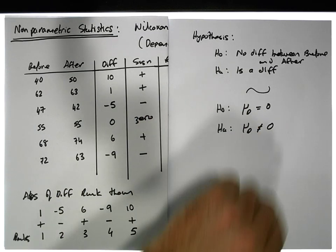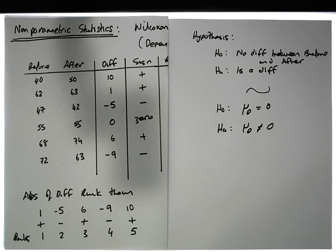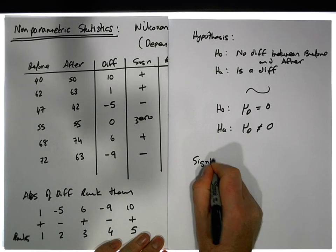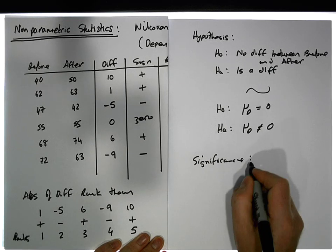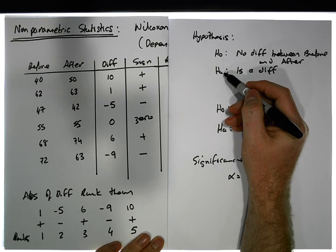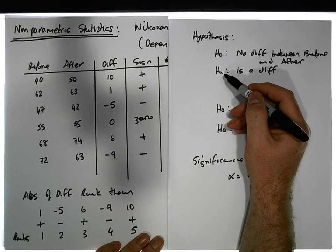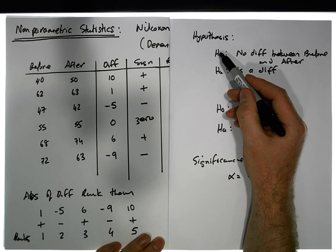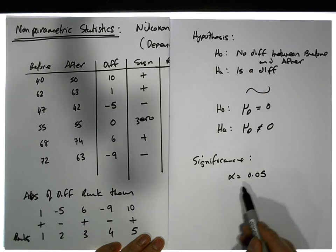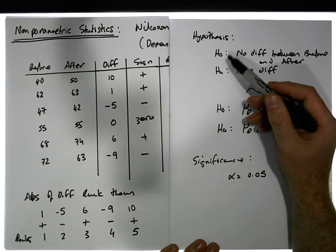The significance level for the test, we'll set alpha equal to 0.05. If I do reject the null, sometimes I can reject the null incorrectly. I'm willing to accept that happening five percent of the time, so I'll be 95 percent confident if I do reject, I have rejected correctly.